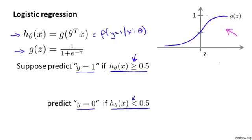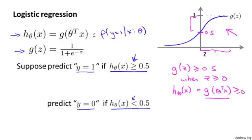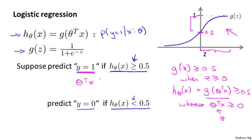If we look at this plot of the sigmoid function, we'll notice that g of z is greater than or equal to 0.5 whenever z is greater than or equal to 0. So it's in this half of the figure that g takes on values that are 0.5 and higher. When z is positive, g of z, the sigmoid function, is greater than or equal to 0.5. Since the hypothesis is h of x equals g of theta transpose x, this is therefore going to be greater than or equal to 0.5 whenever theta transpose x is greater than or equal to 0. So our hypothesis is going to predict y equals 1 whenever theta transpose x is greater than or equal to 0.